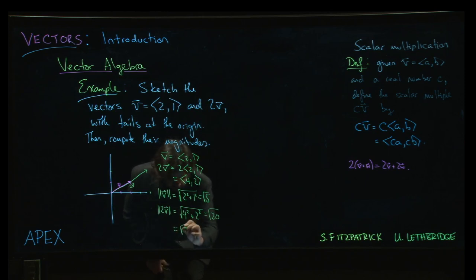Oh, but 20 is 4 times 5, so if you remember your tricks for simplifying square roots, that's root 4 times root 5, which is indeed 2 root 5,